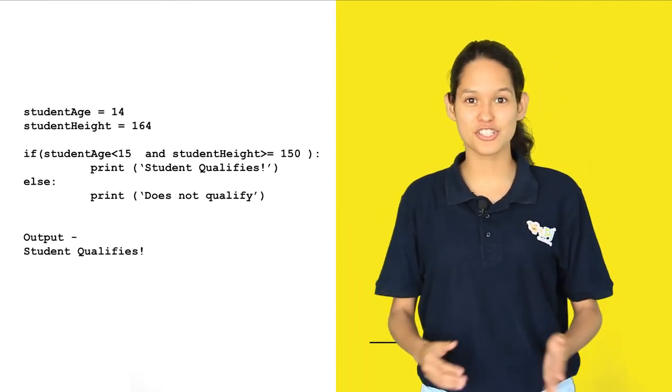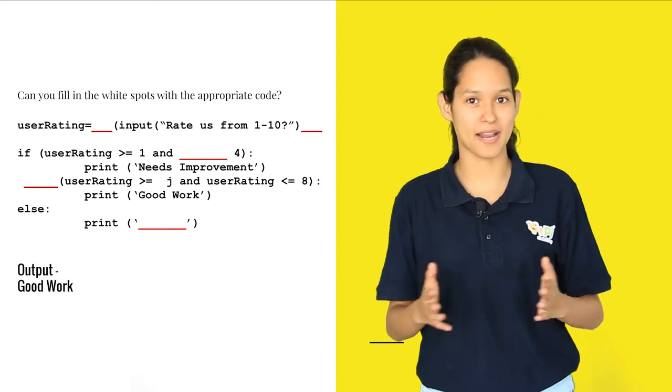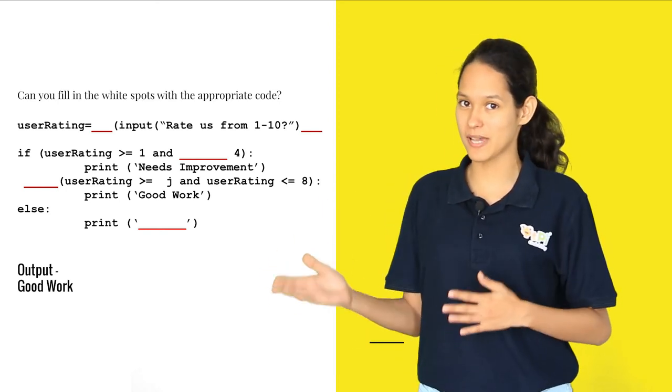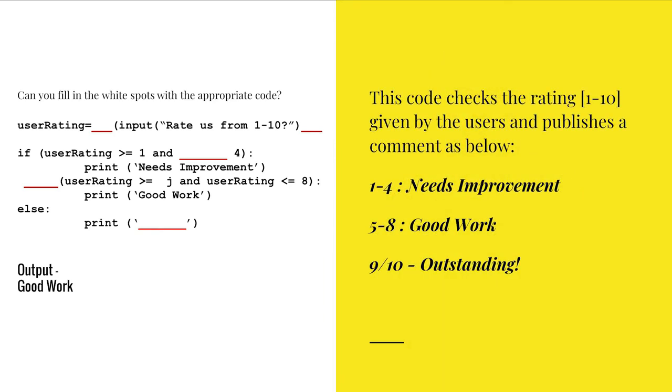In your next challenge, here's a piece of code that has blank spaces. You can use appropriate code to fill in these blank spaces. You can also use this information to get the output good work. You have 60 seconds to do it.